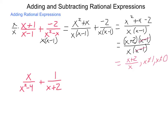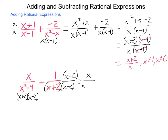We have x divided by x squared minus 4, plus 1 times x plus 2. We can't factor that second denominator, but the first one is x plus 2 times x minus 2. The second denominator has the first part but doesn't have the second, so we multiply it by x minus 2 over x minus 2, giving it the common denominator. So I have x over x plus 2 times x minus 2, plus, distributing, x minus 2 over x plus 2 times x minus 2.